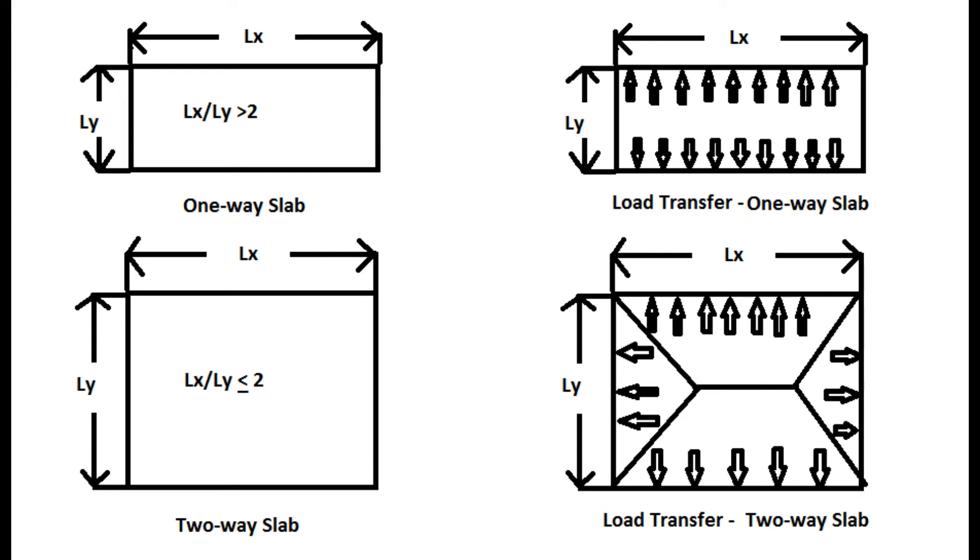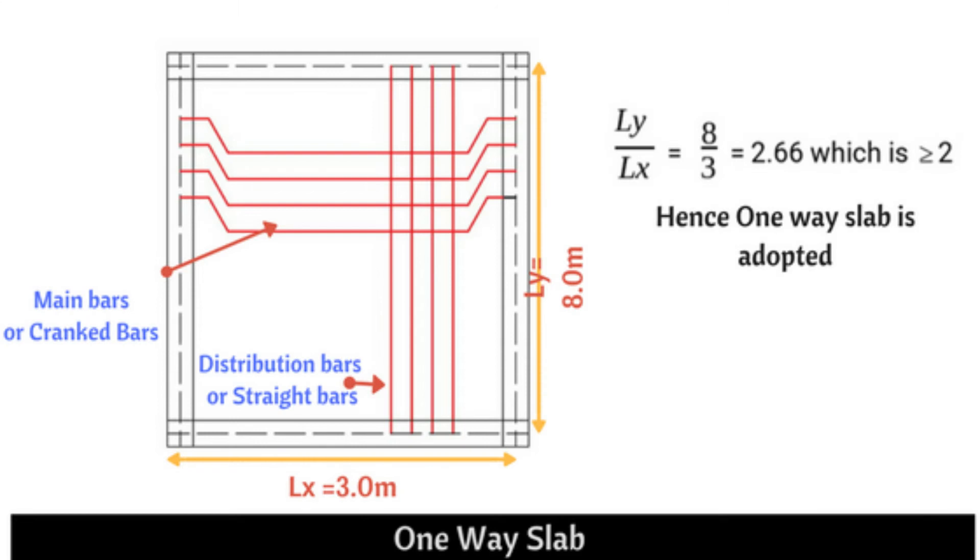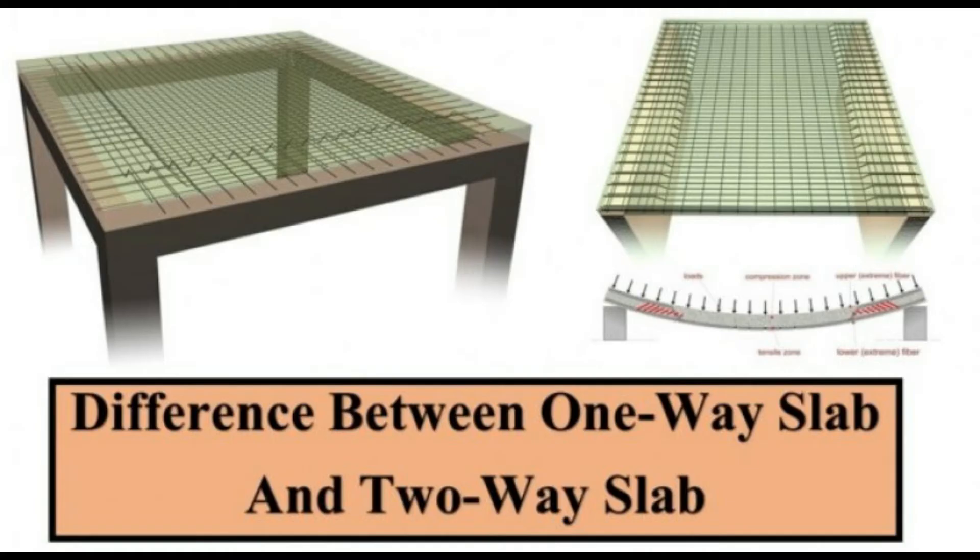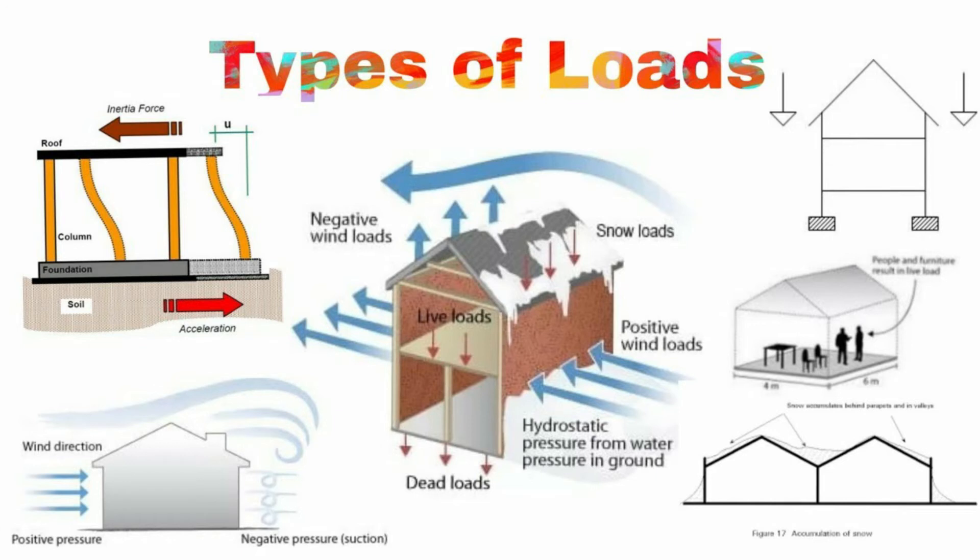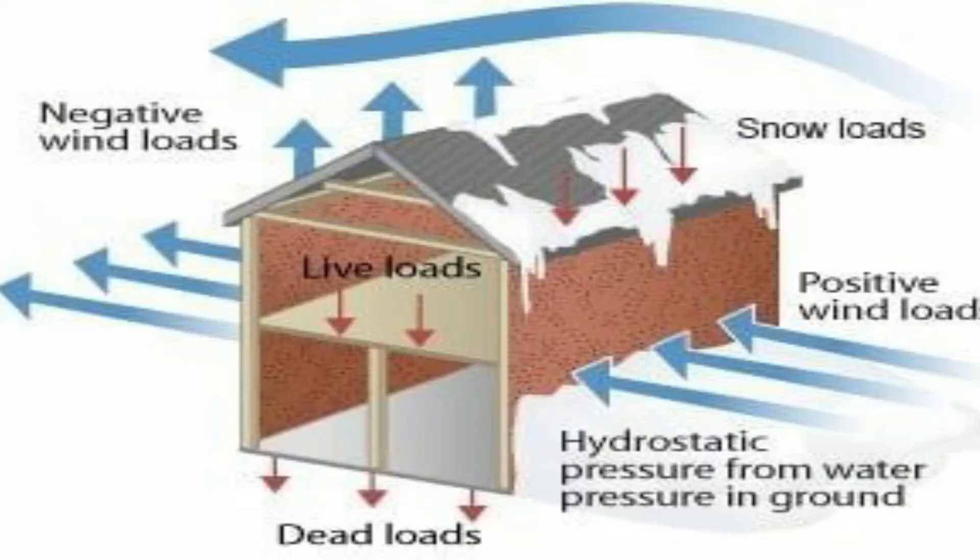In the one-way system, the effect of external loads is transferred primarily in one direction. The slab beam and girder floor is an example of a one-way system. The gravity load acting on this system is transferred from the slab to the beams and then to the girders. Finally, the girders transfer the load to the columns.